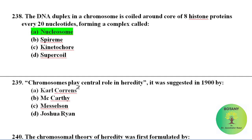Chromosomes play a central role in heredity. It was suggested in 1900 by Karl Correns.